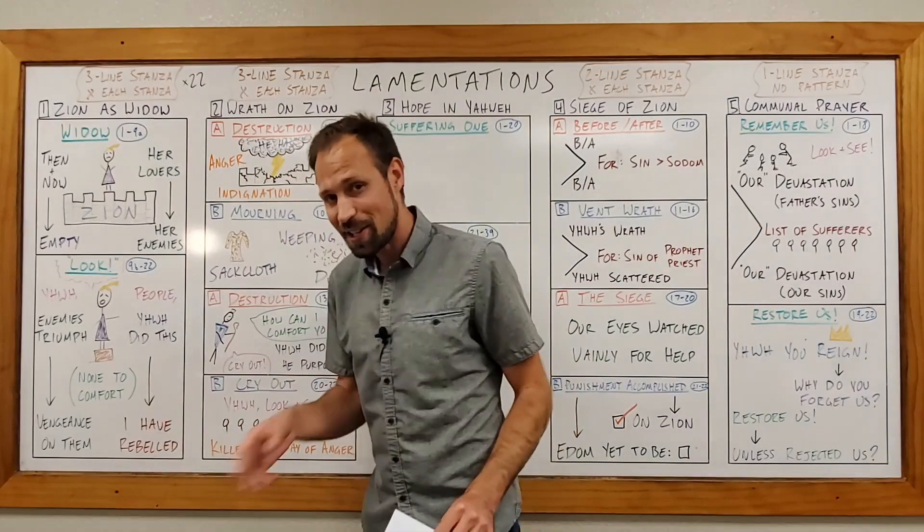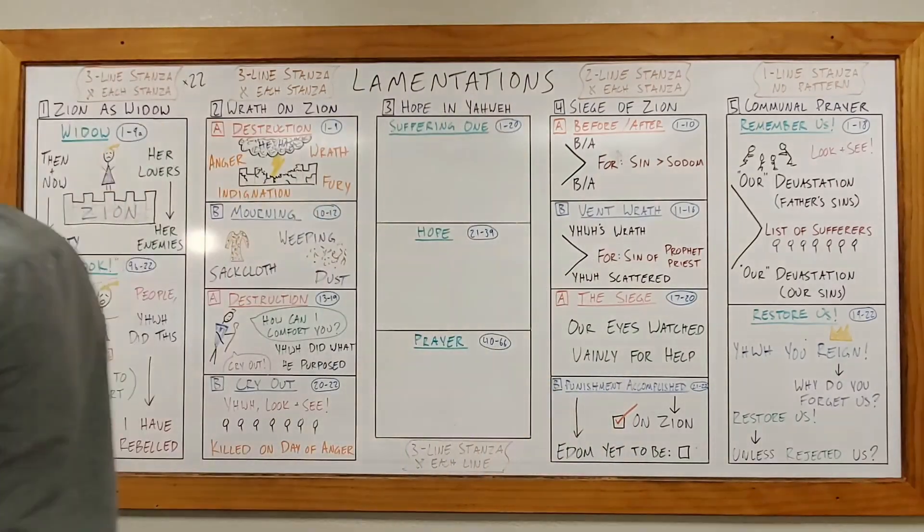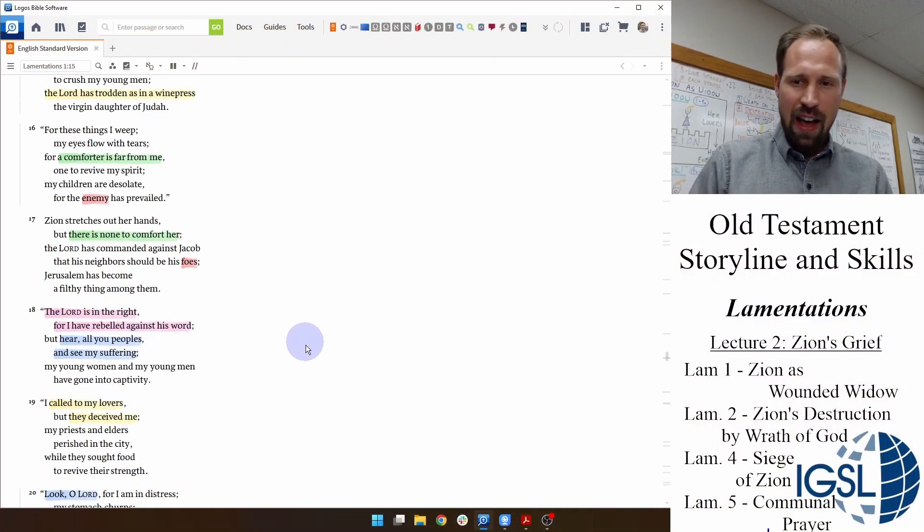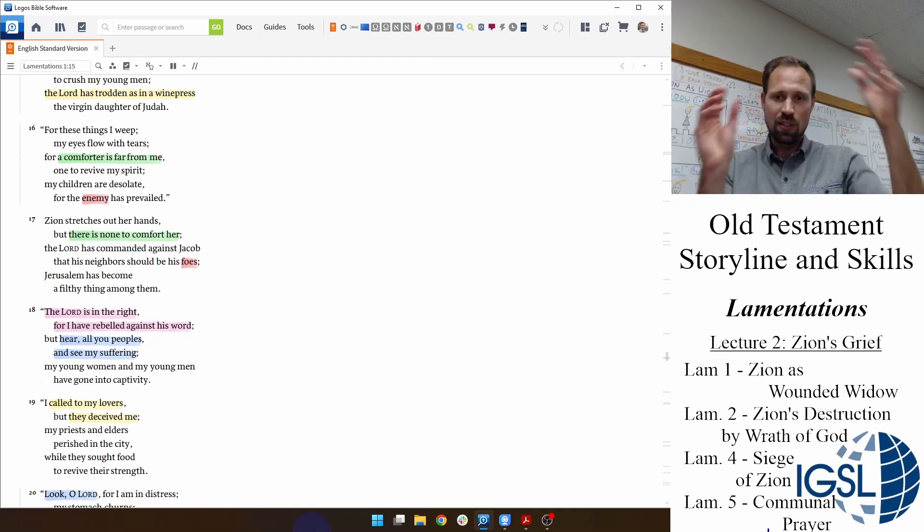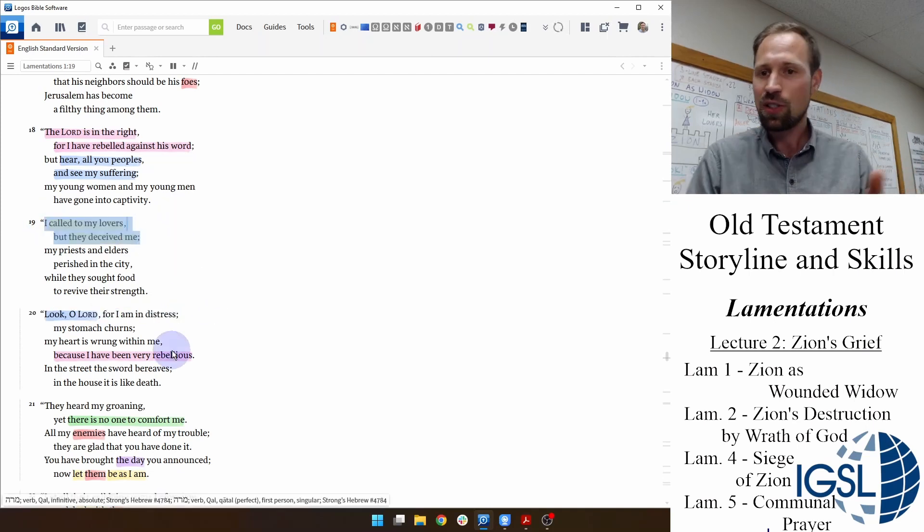And she makes this statement in a pretty neat chiasm, starting in verse 18 of chapter 1. Let's look at that chiasm. Now, you remember what a chiasm is, don't you? How the outside sections match, and then the inside sections, and there's often a center section. Well, that's the case here in 18 through 20. We see the outside section is a statement of a confession of rebellion. The Lord is in the right, for I have rebelled against his word. And then down in 20, I have been rebellious. And then in one step is a call to look and to see. Hear, all you peoples, and see my suffering. In one step, look, O Lord, for I am in distress. And what is in the center? I called to my lovers, but they deceived me.